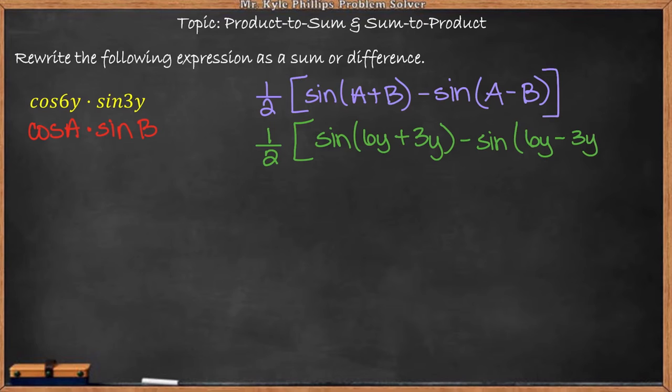Now from here what we're going to do is add these like terms and here we'll subtract. So we have 1 half times sine of 9y and we have sine of 3y.